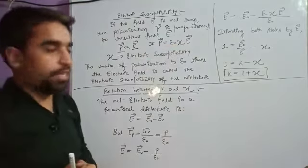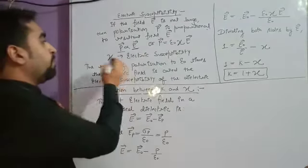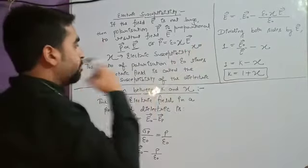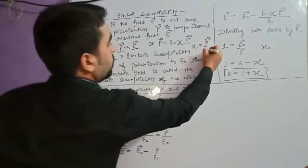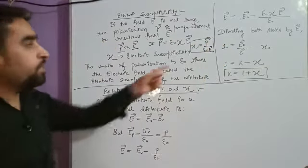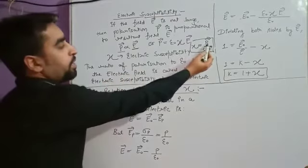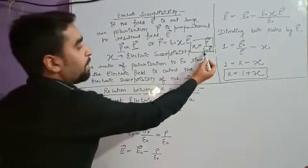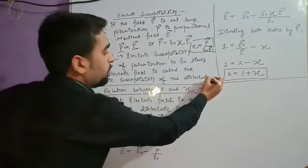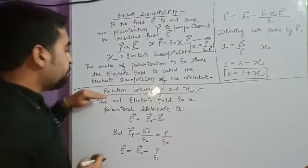Chi (χ) is the electric susceptibility — it tells how much the electric field can influence the material. From this relation, the value of χ equals P divided by (ε₀ · E). So susceptibility is defined as the ratio of polarization to ε₀ times the electric field, and this is how we define electric susceptibility of a dielectric.